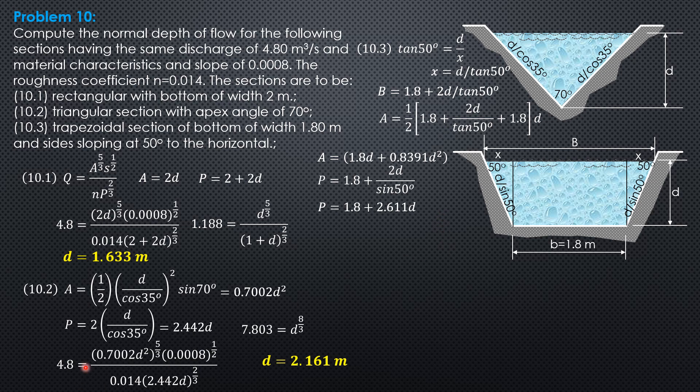Substitute into our formula here. 4.8 equals 1.8D plus 0.8391D square raised to 5 thirds times 0.0008 to the 1 half over 0.014 times quantity 1.8 plus 2.611D to the 2 thirds.